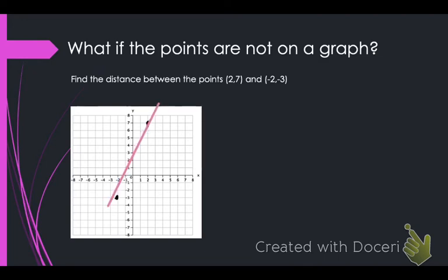And then we follow the same steps. We connect the two. And then we rise and we run. So, we're going to go up and over. And then we're going to count the sides. So, my rise was one, two, three, four, five, six, seven, eight, nine, ten. My run is one, two, three, four. And then I calculate the hypotenuse, which I will not make you do.